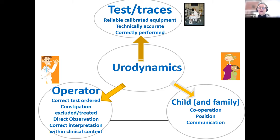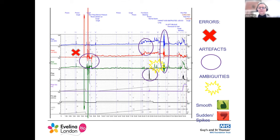There are various places where things can go wrong. Looking at a study I did recently, things don't always go as smoothly as you would hope. Firstly, errors — errors are avoidable and, strictly speaking, shouldn't happen. But we're human and they do occur, so if they do occur, you need to recognize them and correct them. In this case, I didn't initially recognize that the P-ABD line wasn't working.